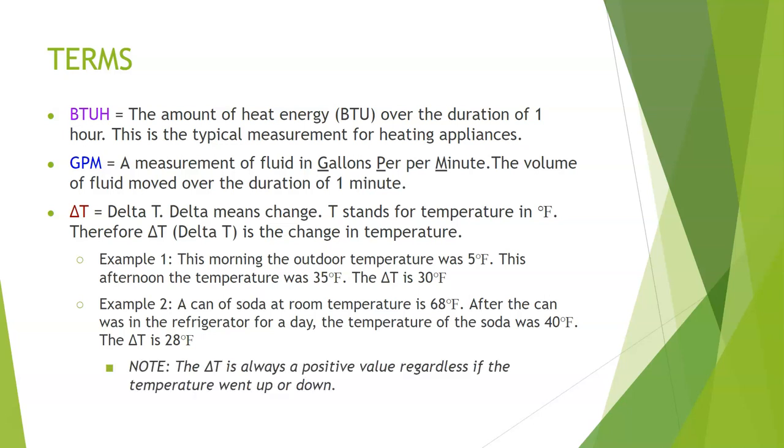You'll notice that the delta T is always a positive value regardless of whether the temperature went up or down. In example one my temperature increased from 5 to 35 degrees. In example two my temperature decreased from 68 down to 40. But my delta T is still a positive value. You may be asking, what if I'm working on a chiller system or a chilled water system? Doesn't matter. The delta T will always be positive. You will know if you need to make the water warmer or colder, but the delta T cannot be negative.